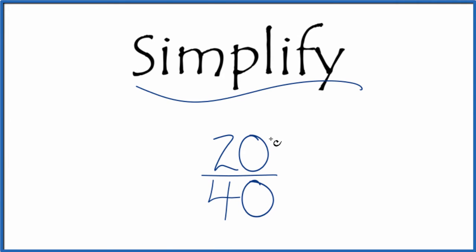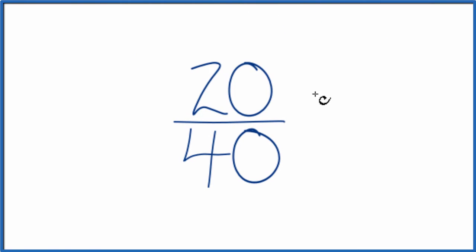If you're asked to simplify the fraction 20/40, here's how you do it. What we're trying to do is find another fraction that's equal to 20 over 40. It has the same value, it's just that it's been reduced or simplified down to lowest terms.